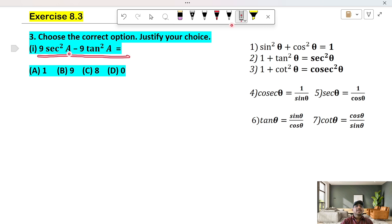This is 9 sec square A minus 9 tan square A. That is not a problem. 9 sec square A minus 9 tan square A.